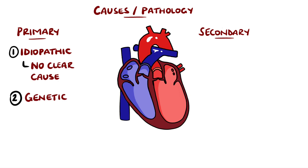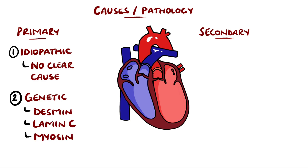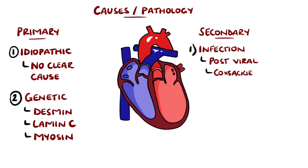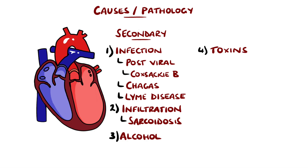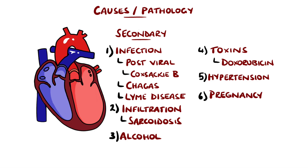There may be a genetic cause; however, if there is no clear genetic cause, it is often classified as being idiopathic. There have been mutations in various parts of the cardiac myocytes implicated, including desmin, lamin-C, and myosin. Secondary causes include infectious myocarditis, such as post-viral infection like Coxsackie B, or other infections like Chagas disease or Lyme's disease. Infiltrative diseases like sarcoidosis, alcohol use, chemotherapy such as doxorubicin, and hypertension may all lead to dilated cardiomyopathy, and pregnancy is another possible cause that is reversible in around half of cases.